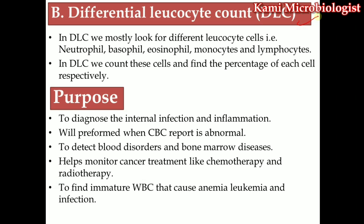In the previous video we talked about total leucocyte count, where we count all WBC cells. In differential leucocyte count, we count different WBC types one by one — neutrophils, basophils, eosinophils, monocytes, and lymphocytes — and we mostly focus on the percentage of each cell respectively.